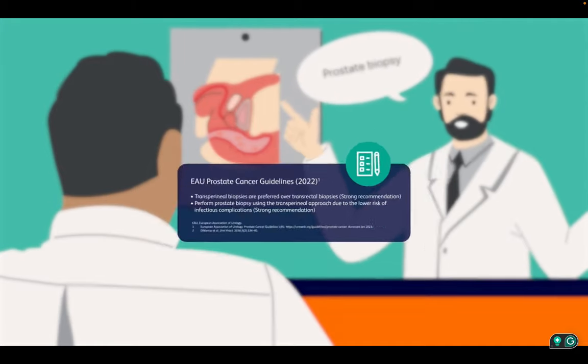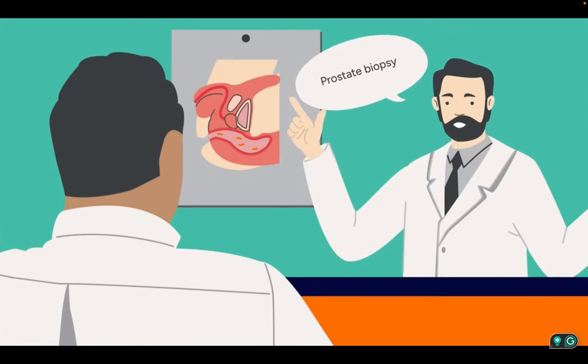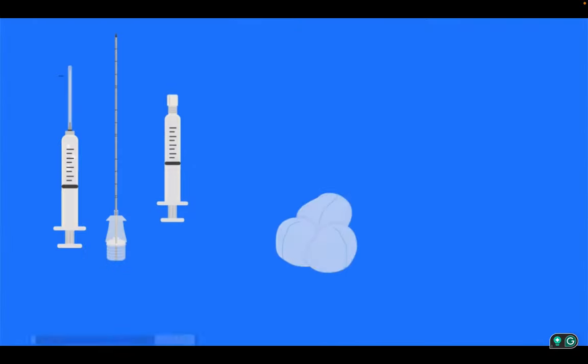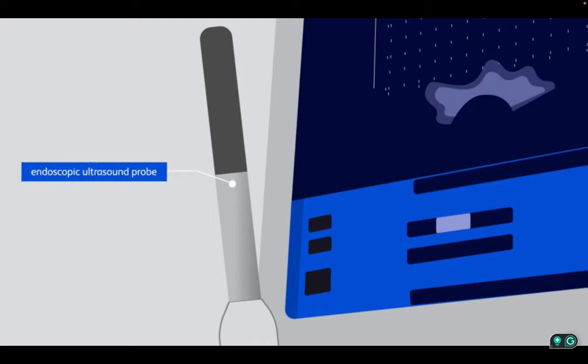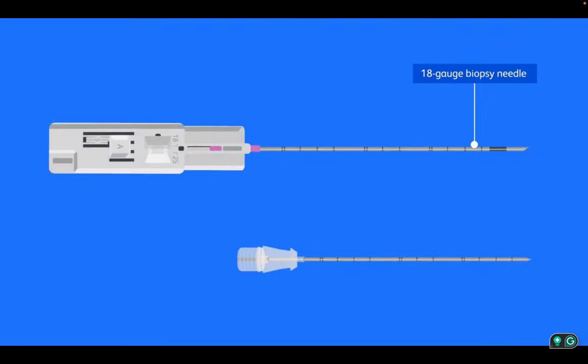This procedure can be performed in an office setting using only local anesthesia. The equipment required for a transperineal prostate biopsy using the BD Marquis biopsy instrument is very similar to that already used during a transrectal approach, including the same endocavity ultrasound probe one would typically find in clinics where prostate biopsies are performed. The BD Marquis biopsy kit includes an 18 gauge biopsy needle and corresponding coaxial supplied in a single sterile pack.